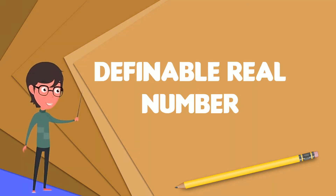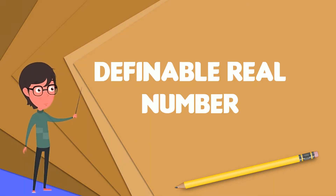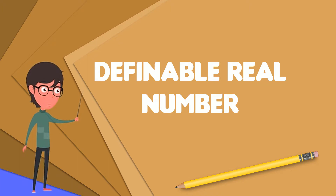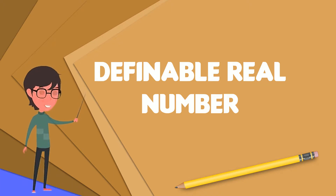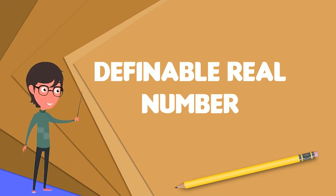Informally, a definable real number is a real number that can be uniquely specified by its description. The description may be expressed as a construction or as a formula of a formal language.